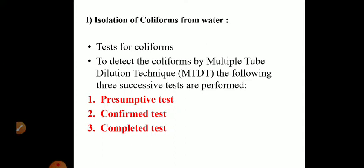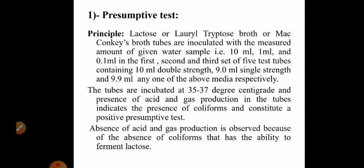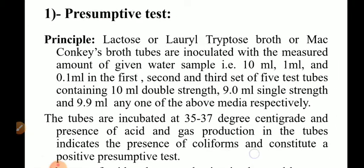The whole procedure is carried out in three successive tests: number one, presumptive test; number two, confirmed test; and number three, completed test. The first test performed is the presumptive test to check whether coliforms are present or absent. For the presumptive test, the media used are lactose broth, lauryl tryptose broth, or MacConkey's broth — any of the three broths can be used.